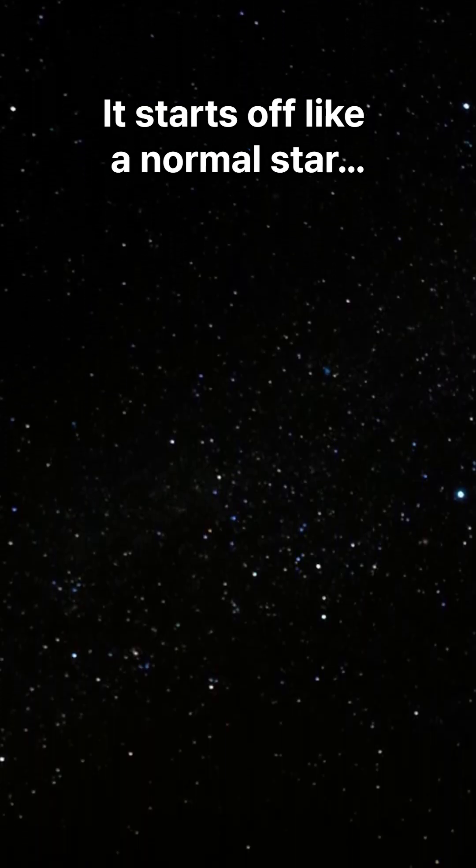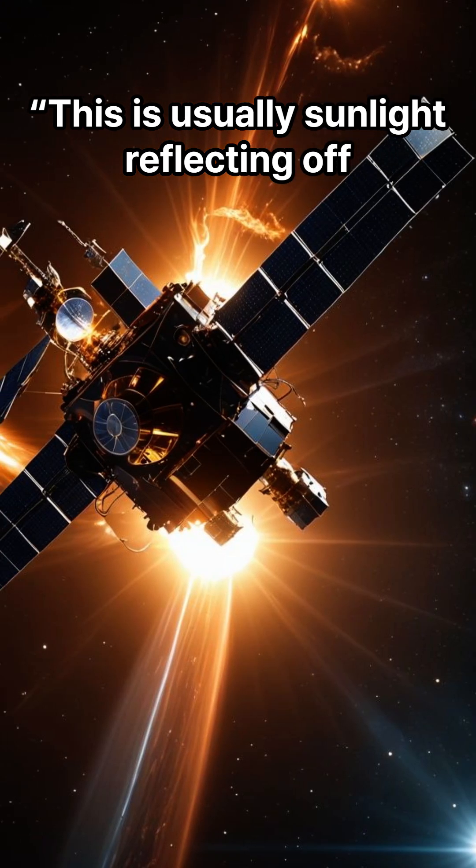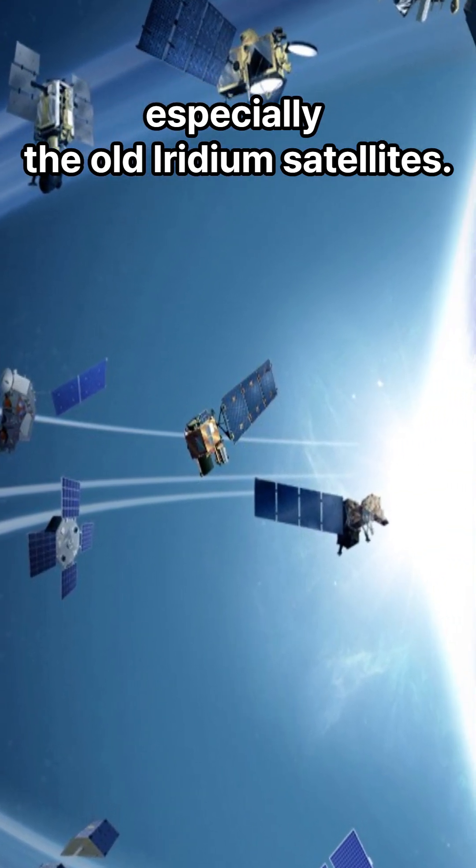It starts off like a normal star. Then suddenly the brightness shoots up. This is usually sunlight reflecting off a low-Earth orbit satellite, especially the old iridium satellites.